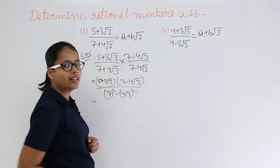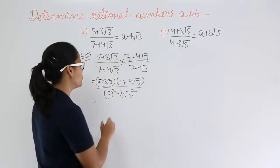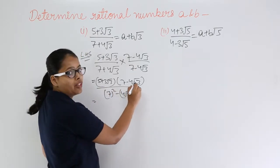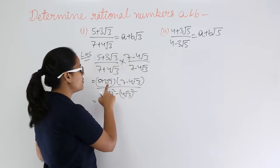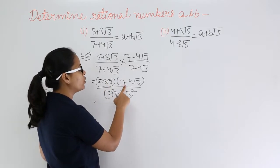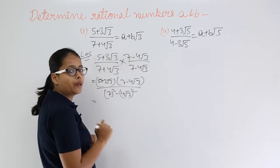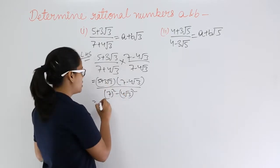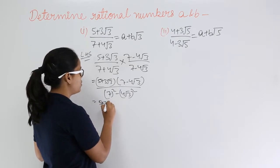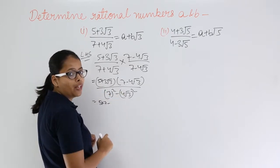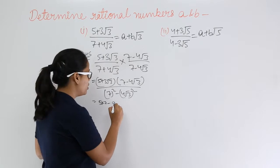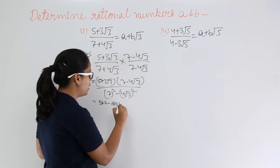Now solve it further. You'll multiply 5 with both of these values, and then multiply 3√3 with both of these values. Multiply 5 into 7, and 5 into 4 will give you 20, so this will be 20√3.